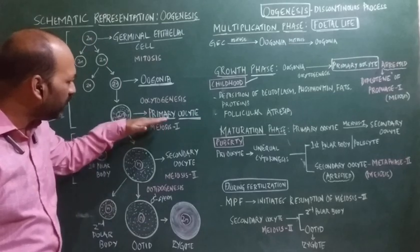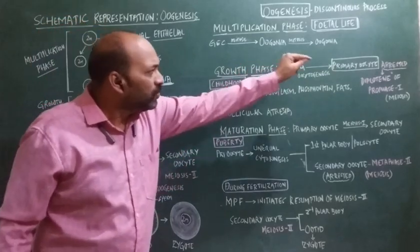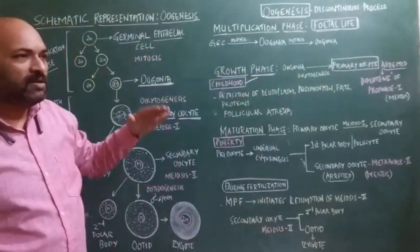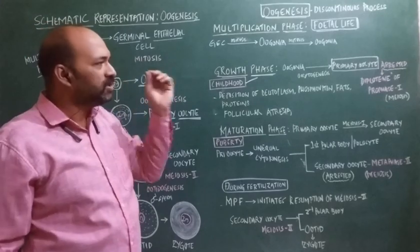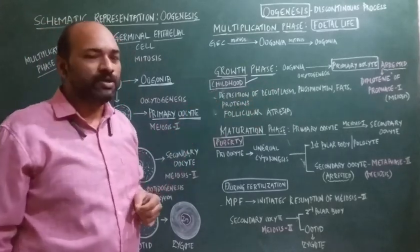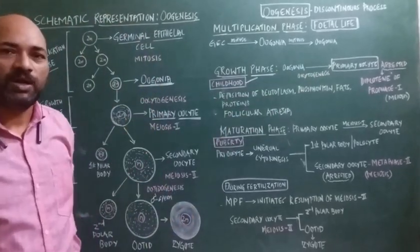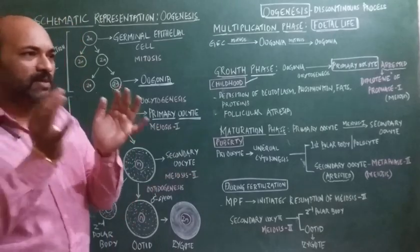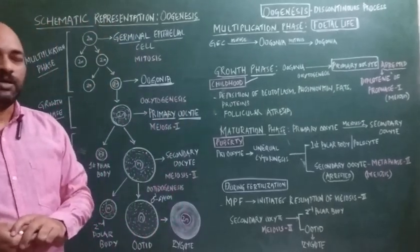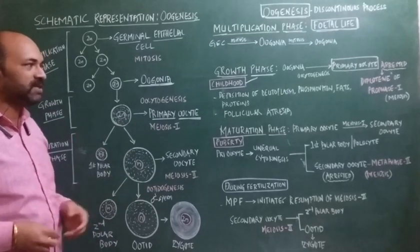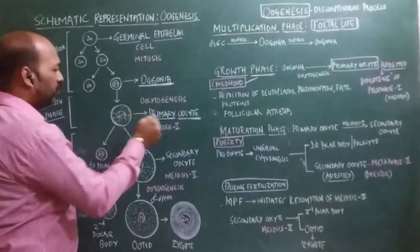The primary oocyte that is formed gets arrested, because for further meiotic changes to occur, hormonal changes are required — which are lacking during childhood. Therefore, the primary oocyte is arrested at the diplotene stage of prophase I of meiosis. The primary oocyte in this arrested state is seen in the primordial, primary, and secondary follicles.